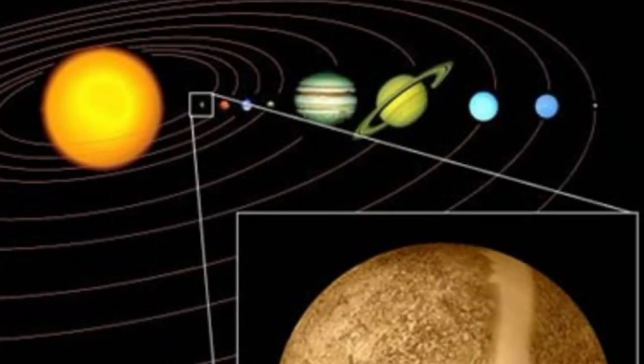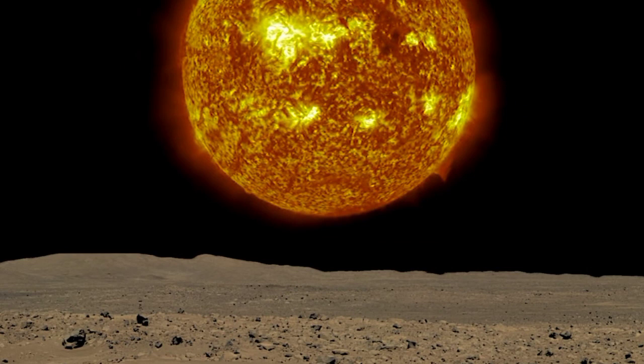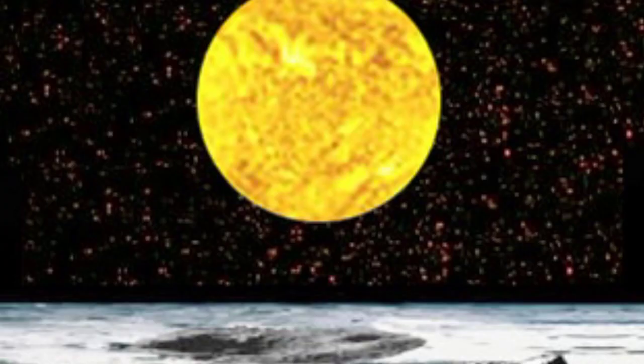The lack of atmosphere and close proximity to the Sun also makes Mercury a planet of extremes. The surface temperature can climb to 800 degrees Fahrenheit during the daytime and fall to 90 degrees below zero at night.